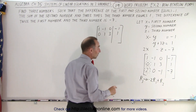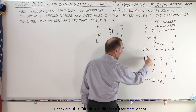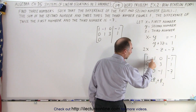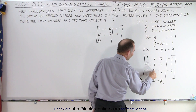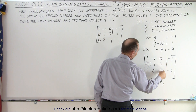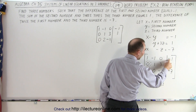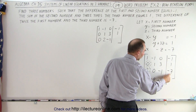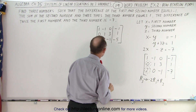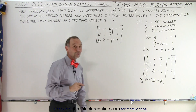Applying the operation to row three: negative two times one is negative two, added to two gives zero. Negative two times negative one is positive two, added to zero gives positive two. Negative two times zero is zero, added to negative one is negative one. Negative two times negative one is positive two, added to negative seven is negative five. So now the first column has one, zero, zero as desired.